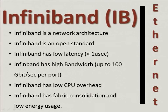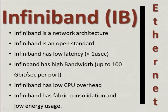InfiniBand has fabric consolidation and low energy usage. It can consolidate networking and storage data over a single fabric and one subnet, which significantly lowers the overall power and management overhead required. In fact, you can have a fabric of 10K nodes in one subnet, and the routing process is determined at layer two between all of these 10K nodes. In one sentence: InfiniBand is a high-speed, low CPU overhead, highly efficient server and storage interconnect technology.